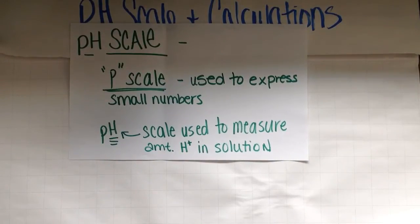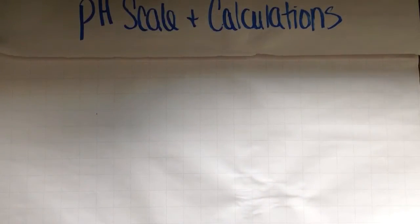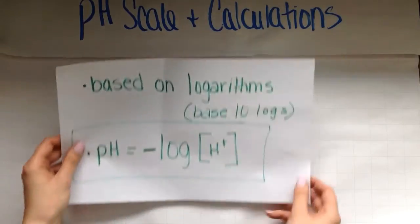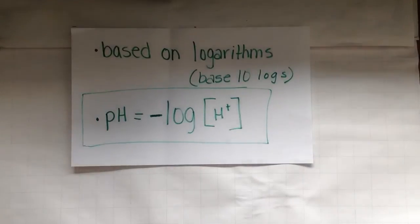Usually the pH scale will range from 1 through 14, though you can go below a 1 and above a 14. A pH scale is based on logarithms, which you've probably learned in math. Logarithms are base 10 logs. So we're going to be using your calculator and the log button.